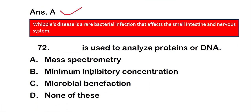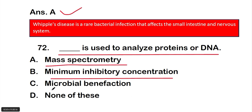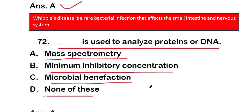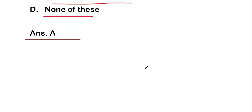Question 72: Dash is used to analyze protein or DNA — options: A: mass spectrometry, B: minimal inhibitory concentration, C: microbial infection, D: none of these. The right answer is option A, mass spectrometry. This is a repeat question — mass spectrometry is used to analyze protein or DNA.